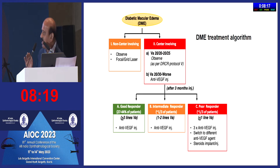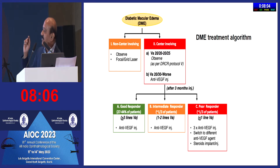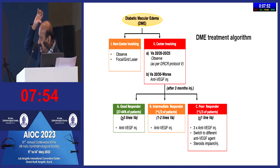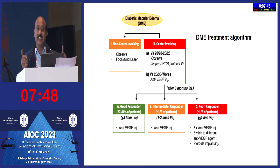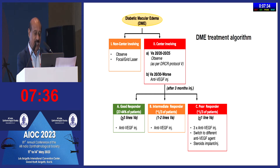If you have ruled out ischemia and traction, assess for injections and determine the vision. If vision is 20/25 or better, observation is better than committing to injections — this needs to be very well understood. When vision is less than 20/30, identify the type of diabetic macular edema: is the patient a good responder, intermediate responder, or non-responder? Depending on that, select the appropriate anti-VEGF agent.